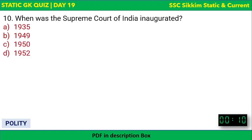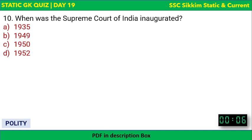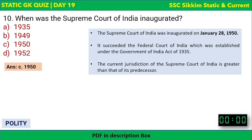Next question: When was the Supreme Court of India inaugurated? The options are 1935, 1949, 1950, or 1952. The correct answer is 28 January 1950. It succeeded the Federal Court of India, which was established under the Government of India Act 1935, and became the Supreme Court of India after 28 January 1950.